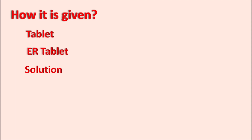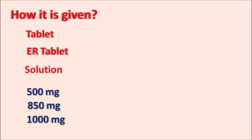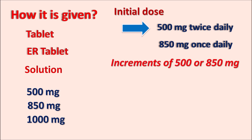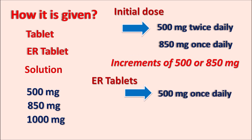Metformin is available as immediate-release tablets, extended-release tablets, and oral solution, in strengths of 500 mg, 850 mg, and 1000 mg. The dose should be individualized. For immediate-release tablets, the initial dose is 500 mg twice daily or 850 mg once daily, with increments of 500 mg or 850 mg after each week. For extended-release tablets, the initial dose is 500 mg once daily with increments of 500 mg per week.